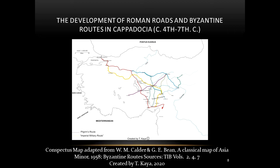There is one new route between Ancyra and Caesarea, which was a crossroad leading to Cappadocia when Justinianopolis was founded in the 6th century. The route from Constantinople to Caesarea, also known as the Imperial Military Route, enabled the development of the late Roman and early Byzantine routes in the region. Thus, the routes coming from the north, south, west, and east of Cappadocia were connected to Caesarea.